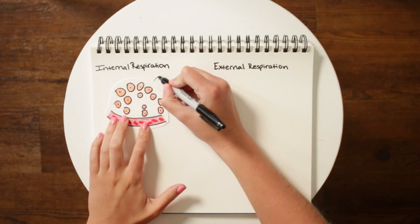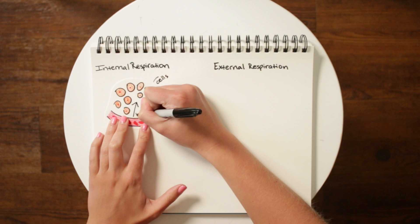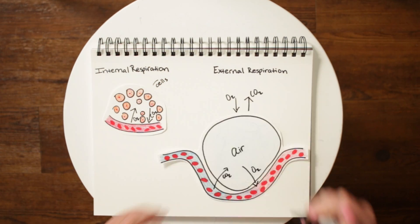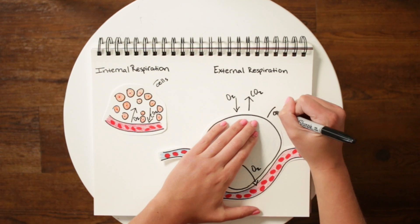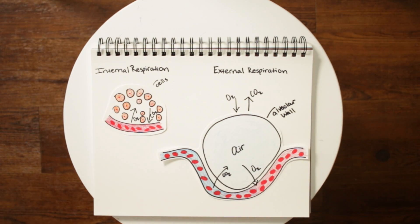Diffusion is gas movement from an area of high to low concentration. This can happen either in the internal tissues between cells and capillaries, or externally between alveoli and lung capillaries. This process is also known as respiration. Perfusion simply refers to blood flow to tissues and organs.